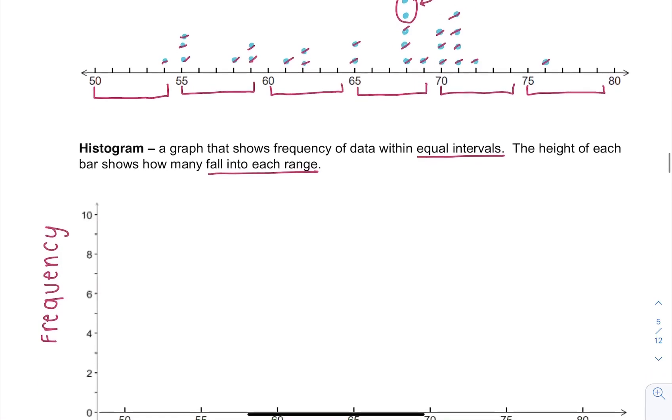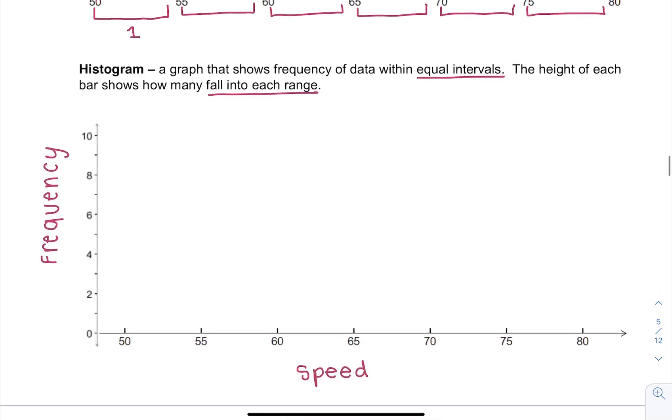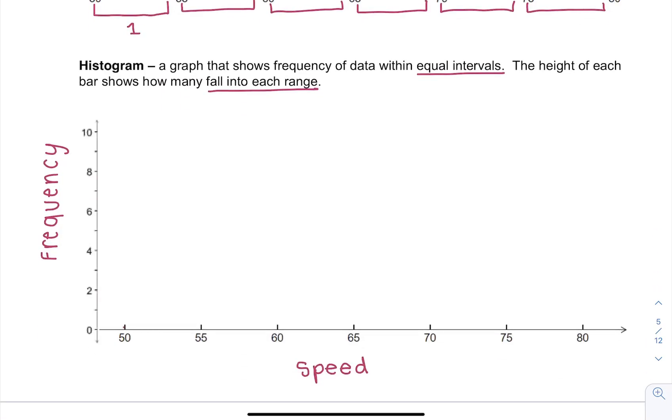Now in my first interval from 50 up to 55 there's only one, so I'm going to make a bar that shows a frequency of one from 50 up to 55. Now each category is called a bin.